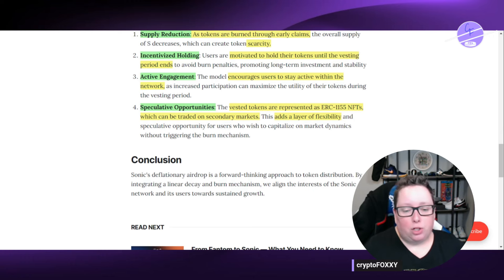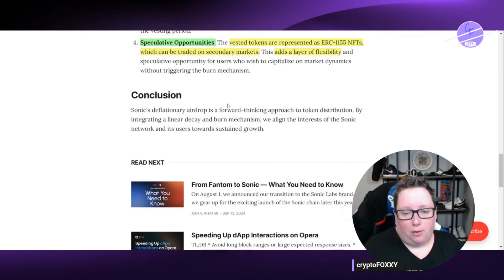So in conclusion, the deflationary airdrop, they say, is a forward-thinking approach to token distribution. So this is something that is going to be very interesting to see come about. We obviously know the factors behind the switching over to Sonic. They're going to reduce time for finality. They're going to make everything quicker, faster, more scalable, all that good stuff, basically everything that a blockchain needs to be. And so it's going to come with this airdrop as well.